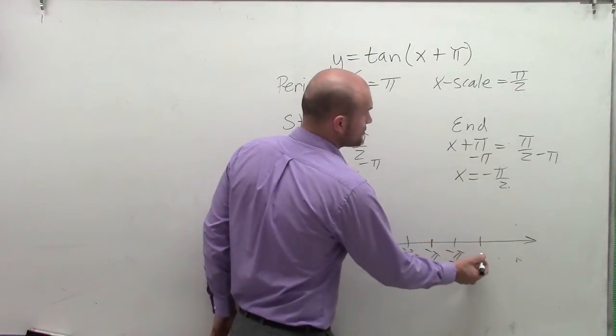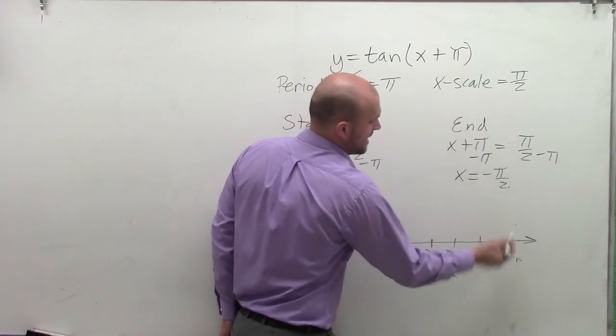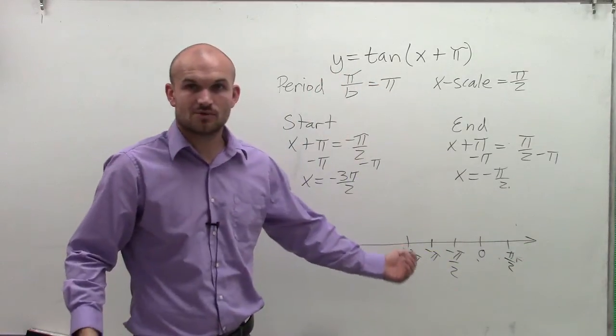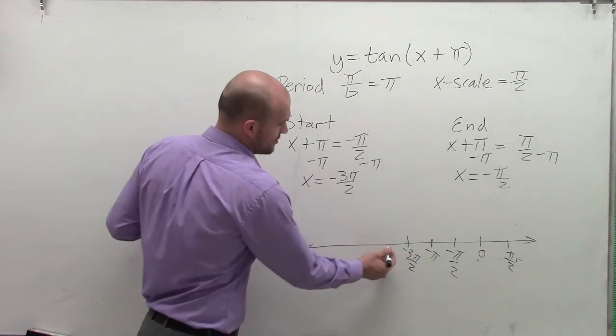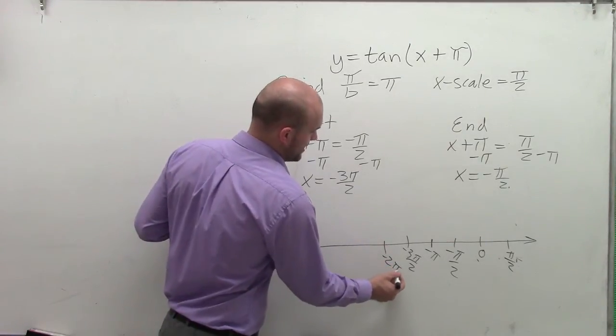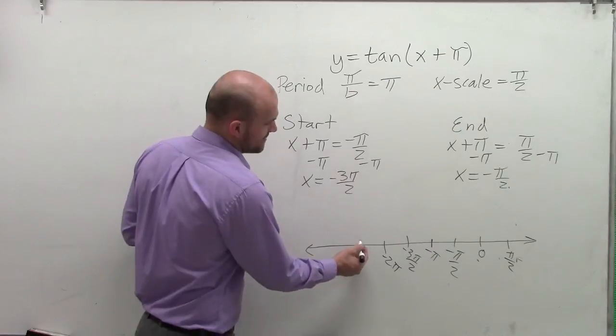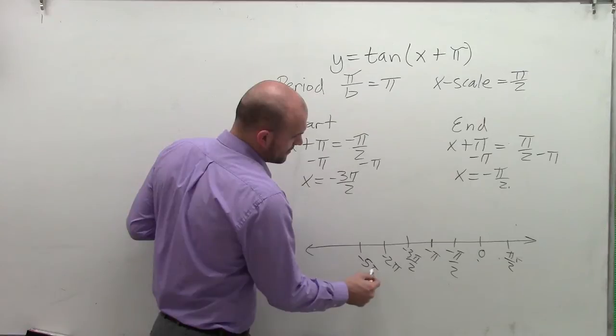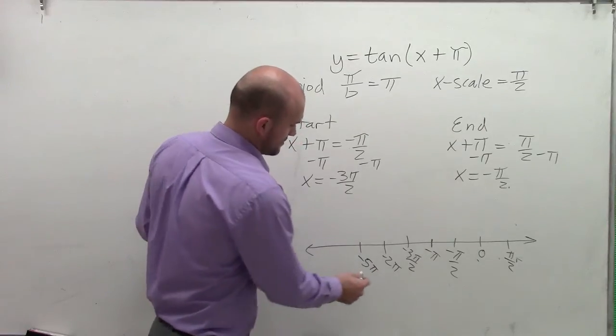If I add my next critical point, which is now going to take me to 0, and then if I add pi halves again, I'll have pi halves. Now this can also work in the negative direction. So by subtracting pi halves, I can now have negative 2 pi. And then if I subtract pi halves again, I'm now going to have negative 5 pi halves.